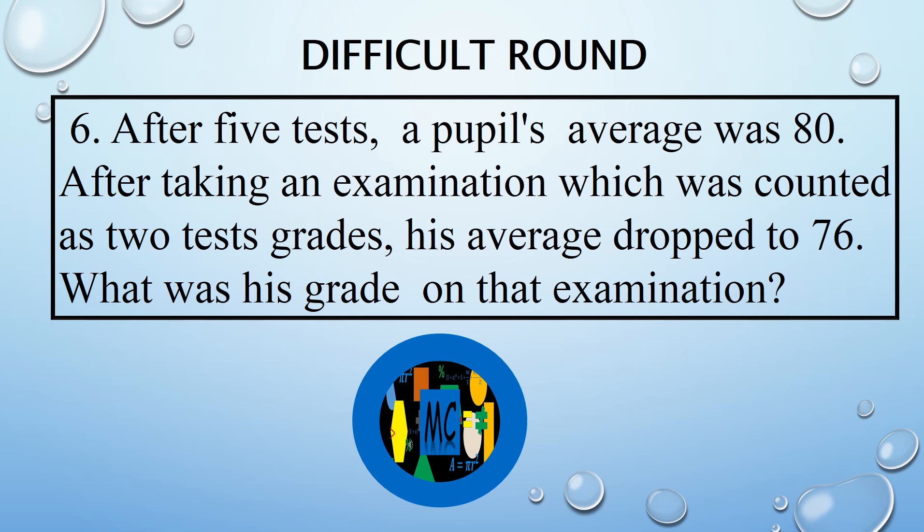After five tests, a pupil's average was 80. After taking an examination which was counted as two test grades, his average dropped to 76. What was his grade on that examination?